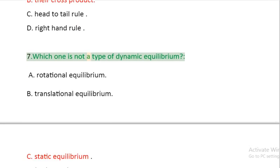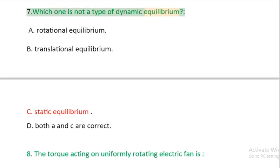Question 7: Which one is not a type of dynamic equilibrium? A: rotational equilibrium. B: translational equilibrium. C: static equilibrium. D: both B and C are correct.